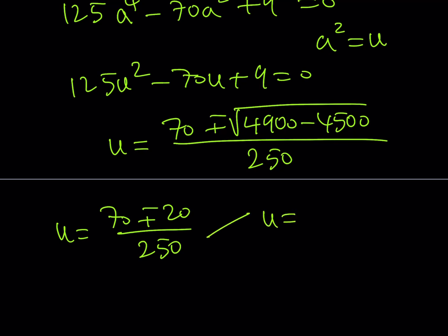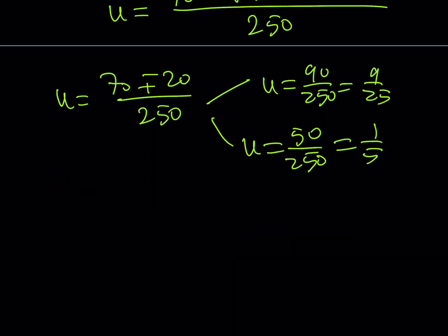I'll get two solutions. One of them is going to be 90/250 which is 9/25 and the other one is going to be 50/250 which equals 1/5. So now what we need to do is take the square root because a² = u. If a² is 9/25, obviously we're not going to accept negative solutions, so a can be 3/5.